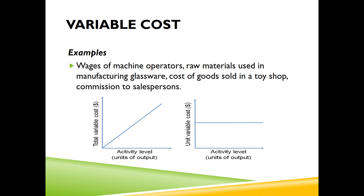Looking at the two variable cost graphs: the first shows total variable cost — if I produce nothing, I don't need to buy any raw materials, so it starts at zero, but the more products I produce, the more raw materials I need and the total variable cost increases. The second graph shows unit variable cost — regardless of how many I produce, the variable cost per unit stays the same. For example, a chair needs ten dollars worth of wood whether I produce one chair or a hundred chairs.